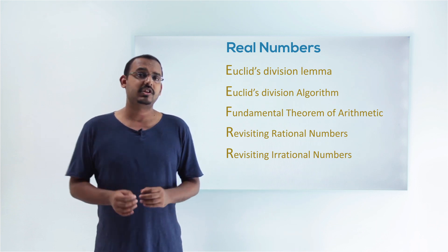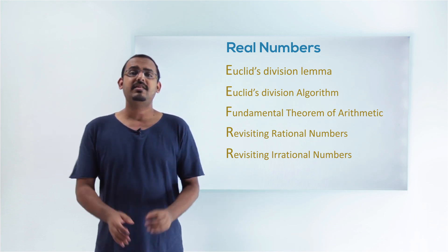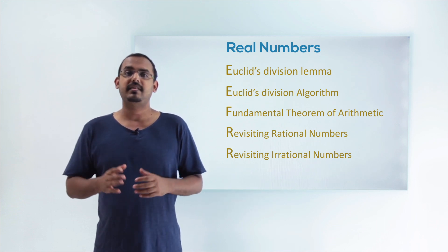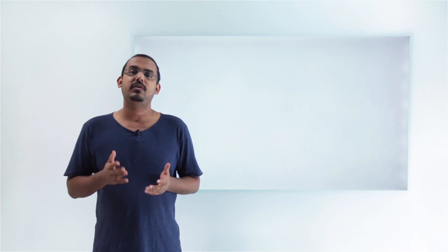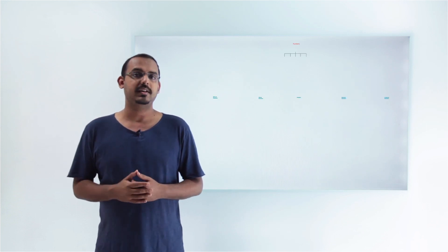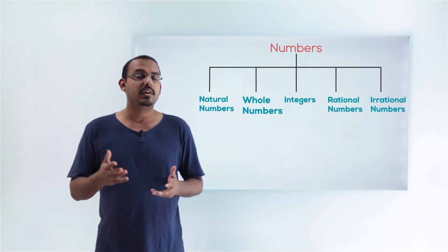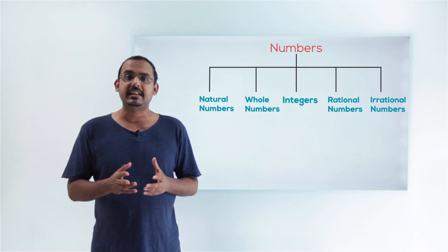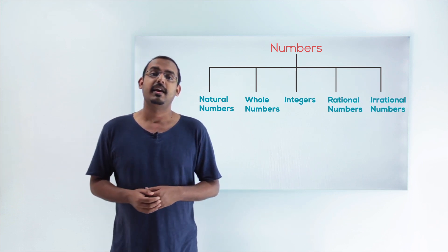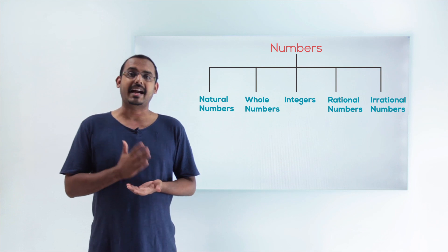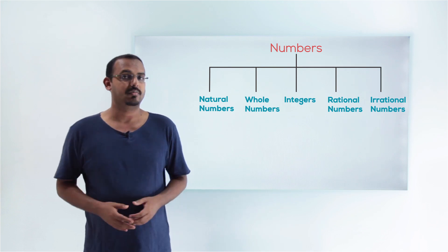But before jumping into this chapter, let's recall some of the basic concepts that we have studied in our previous classes. We have seen that there are multiple categories in which we have put different numbers. So there are natural numbers, whole numbers, integers, rational numbers, and irrational numbers. Let's have a look at what all these categories actually represent.